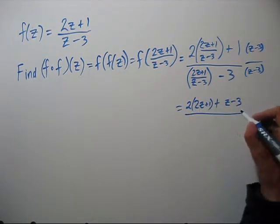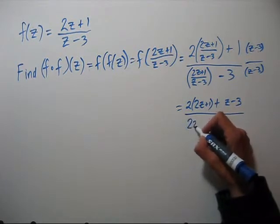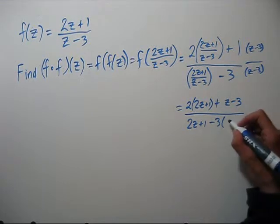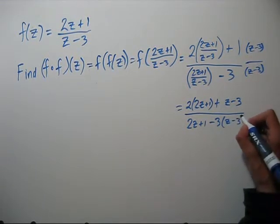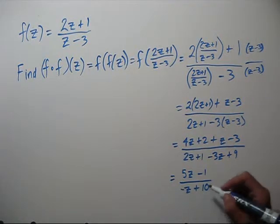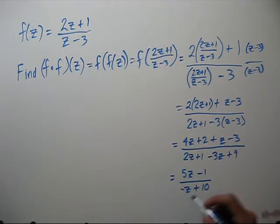And our denominator, same deal, our z minus 3's will cancel, and we're left with a negative 3 times z minus 3 when we distribute. Now let's simplify. There's no common factor in the numerator or denominator, so our answer is this.